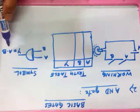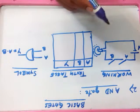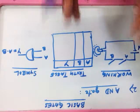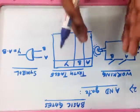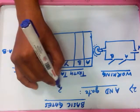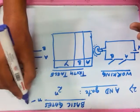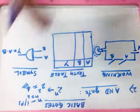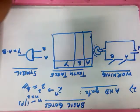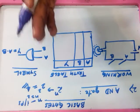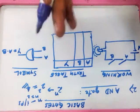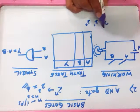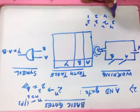Coming to the working, first I will show you how to write the truth table. Check the inputs — we have two inputs. The number of combinations is given by the formula 2 raised to n, where n is the number of inputs. So 2 raised to 2 gives us four combinations. From the rightmost side, start with alternating zeros and ones in the form of 2 raised to 0, 2 raised to 1, 2 raised to 2 — that is 1, 2, 4.